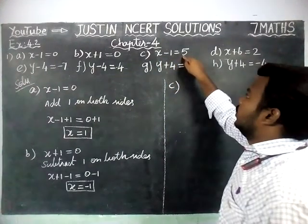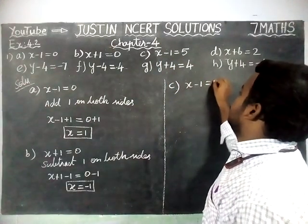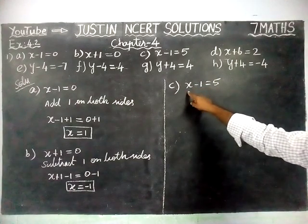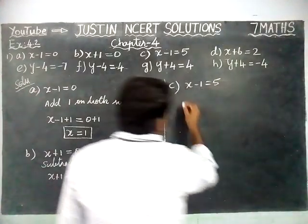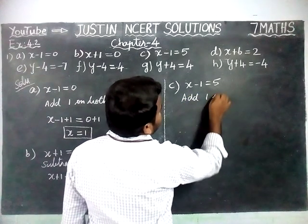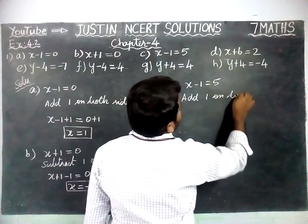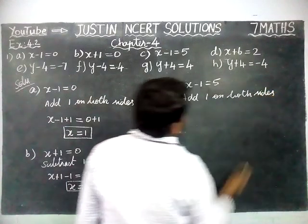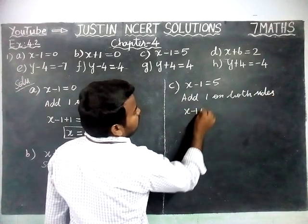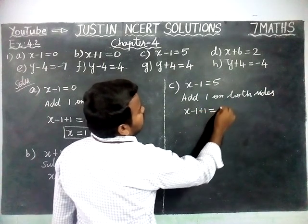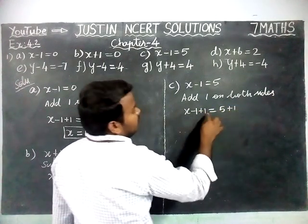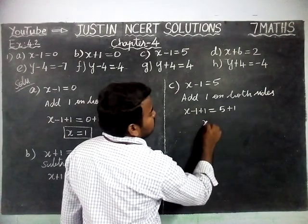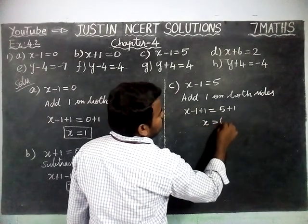Next option C: x minus 1 equal to 5. Here we have minus 1, to separate this variable we are going to add 1 on both sides. So x minus 1 plus 1 is equal to 5 plus 1. Minus 1 plus 1 equal to 0, so x is equal to 5 plus 1 equal to 6.